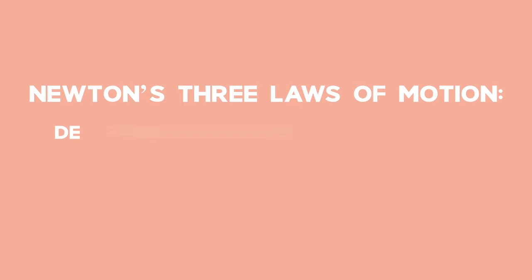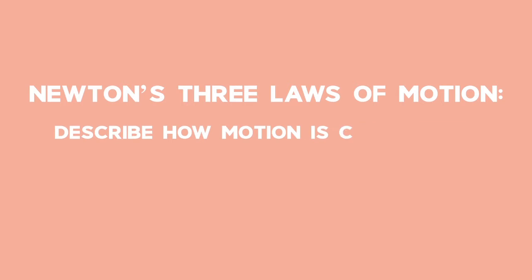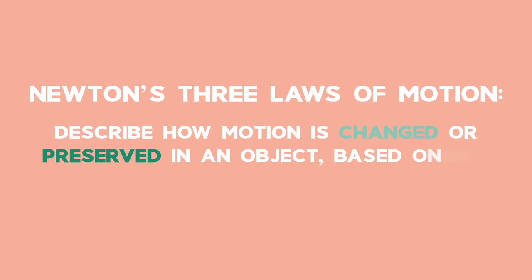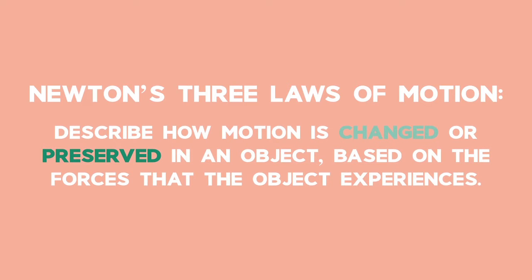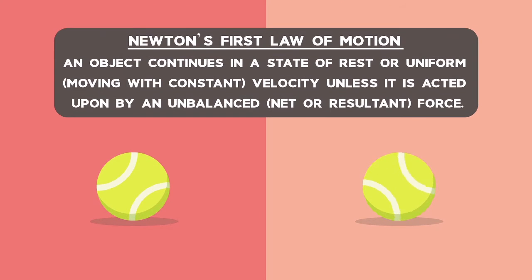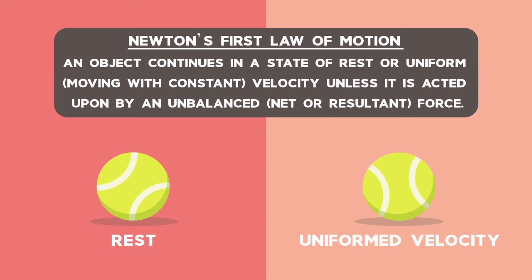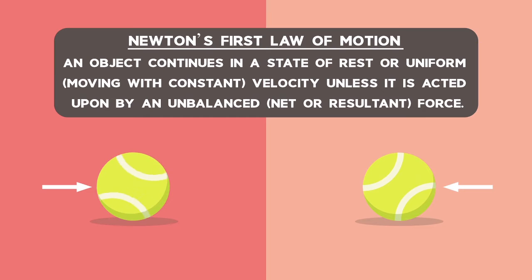Newton's three laws of motion describe how motion is changed or preserved in an object based on the forces that the object experiences. Let's quickly review what those laws are. Newton's first law states that an object continues in a state of rest or uniform velocity unless it is acted upon by an unbalanced force.